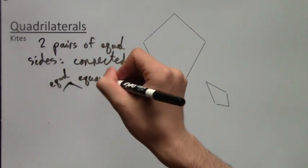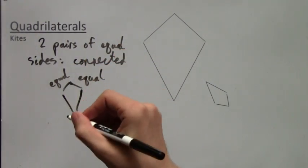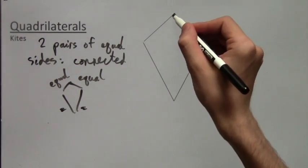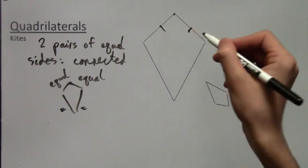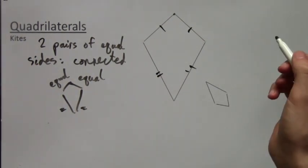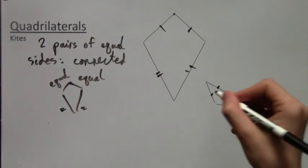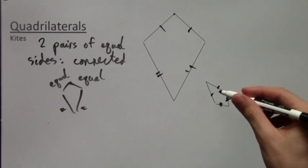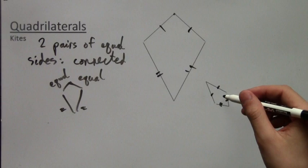Just like I'm drawing here. Two equal sides touching. Another set of two equal sides touching. So these shapes are called kites. The ones that are drawn here. They obviously have two sets, two pairs of equal sides. And they're arranged correctly.